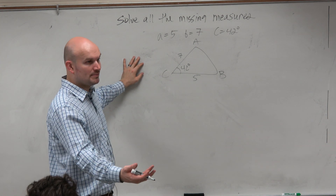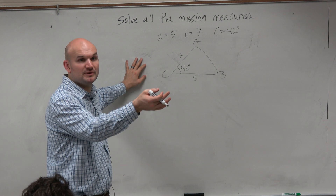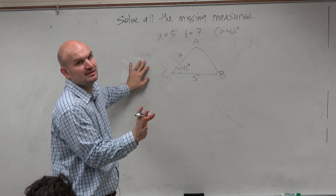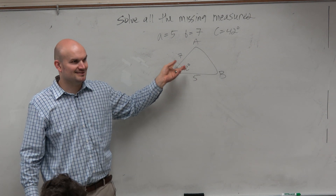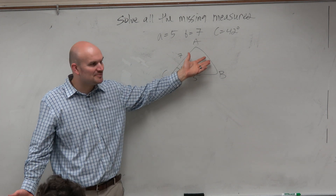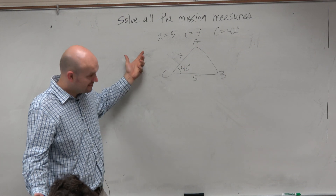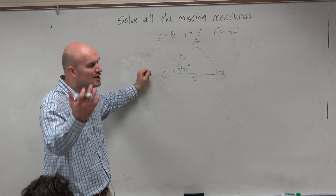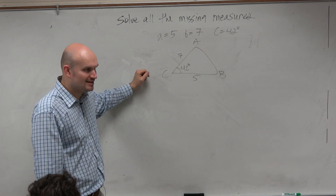Now, last formula that we just did for the law of cosines, we had to know all three sides to find the missing angle. Well, we don't know all three sides. And don't make this mistake — don't do the Pythagorean theorem, because obviously that shows you're not paying attention. It's not a right triangle; you can't apply the Pythagorean theorem. You don't even know if it is one, so why would you apply it?